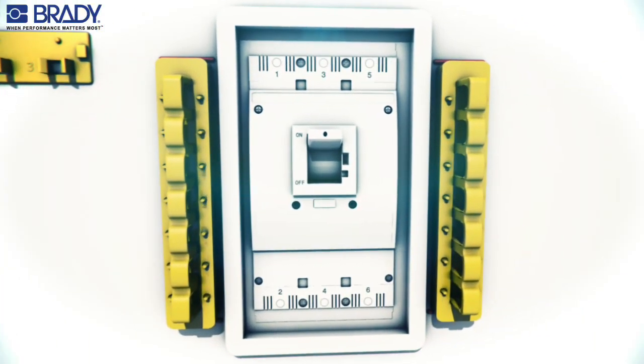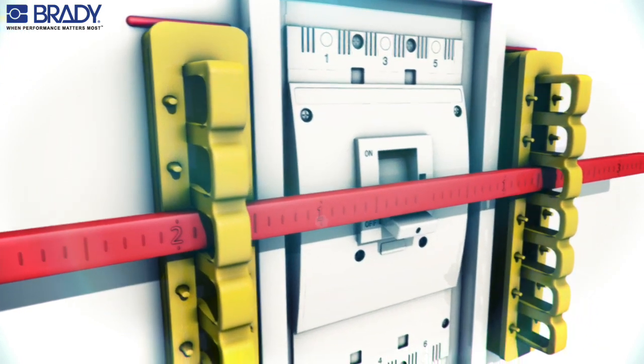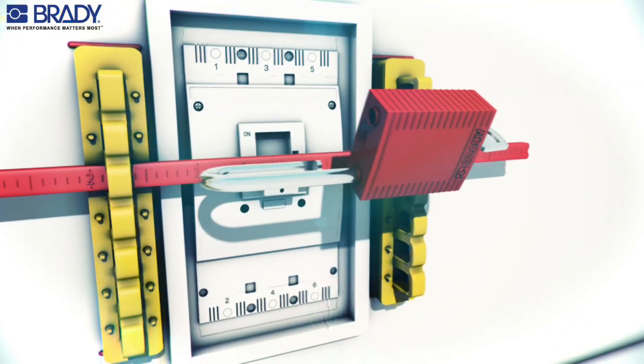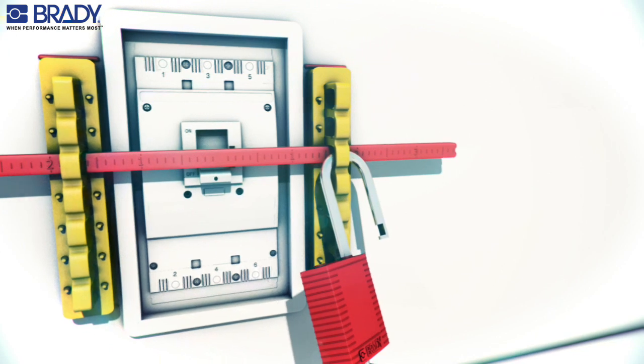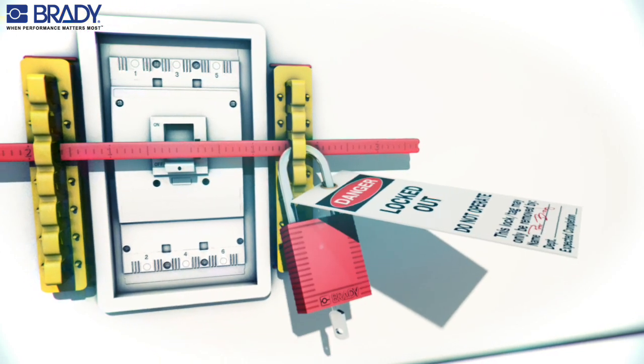To block the switch in the off position, place the red blocking bar. Insert a padlock with a tag in one of the yellow bars at the red bar level.